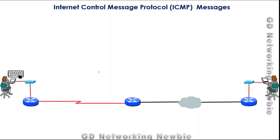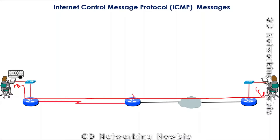To provide messages about errors during the transmission of data from source to destination, another protocol is used. For example, if data is sent from a source to a destination and during transmission some errors occur, ICMP protocol generates messages and sends them back to the host, so the host gets information that there was a problem during transmission.